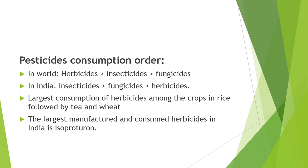The most dangerous weed families are Poaceae, Asteraceae, and Cyperaceae. In the world, the maximum chemical consumption is herbicides, followed by insecticides and then fungicides. In India, the maximum chemical consumption is insecticides, followed by fungicides and then herbicides. In rice crops, the maximum herbicide consumption occurs, followed by tea and wheat. The largest manufactured and consumed herbicide in India is isoproturone.